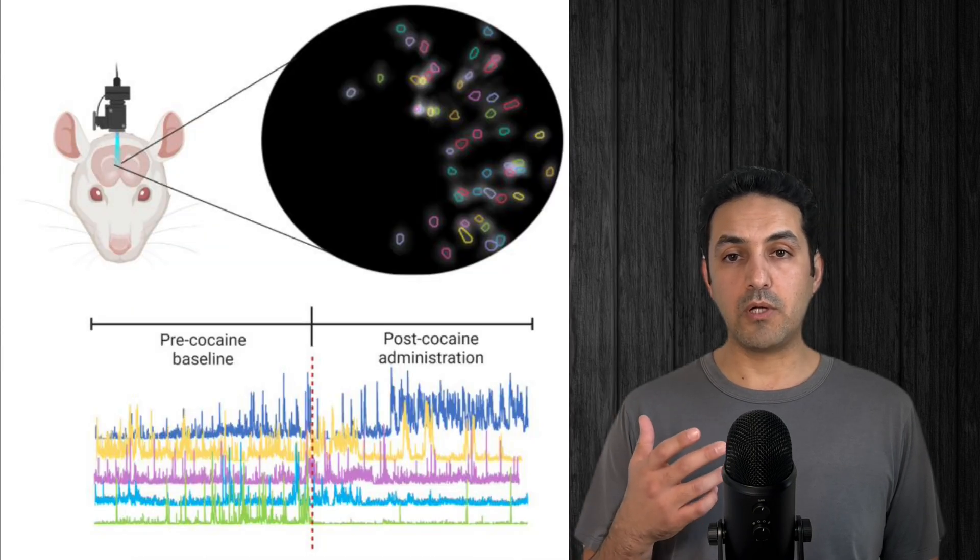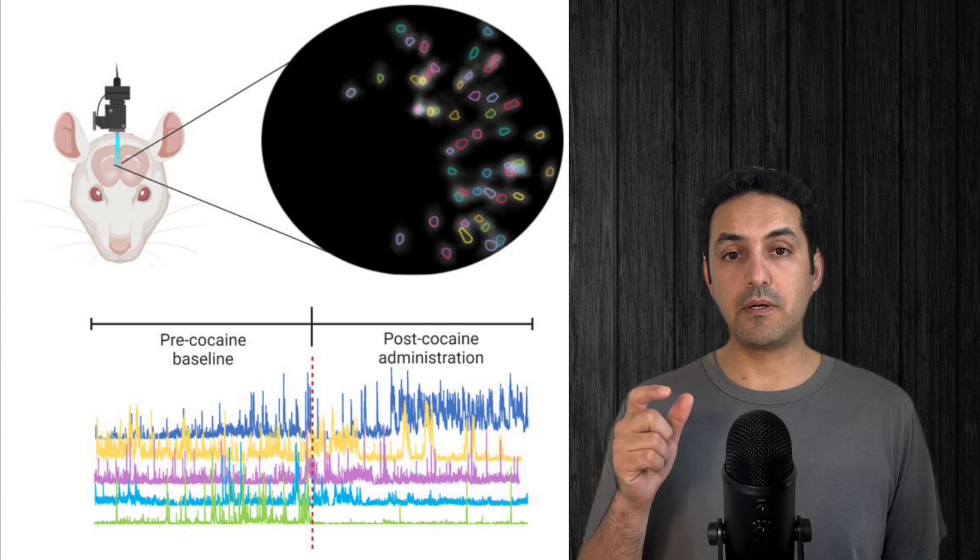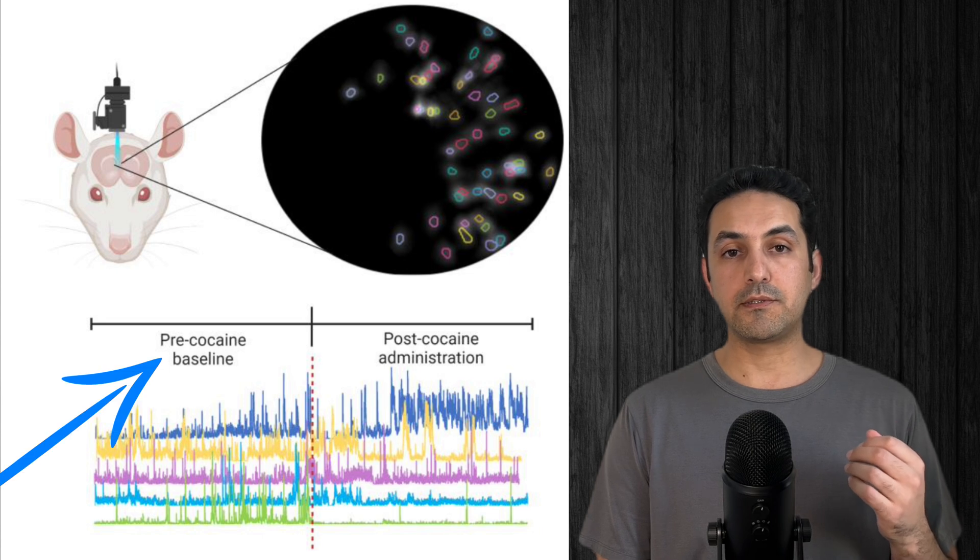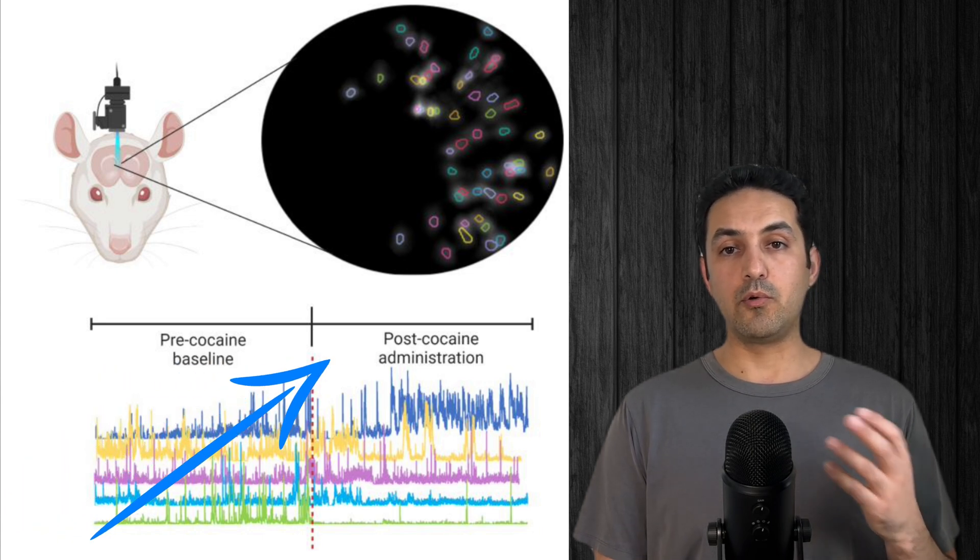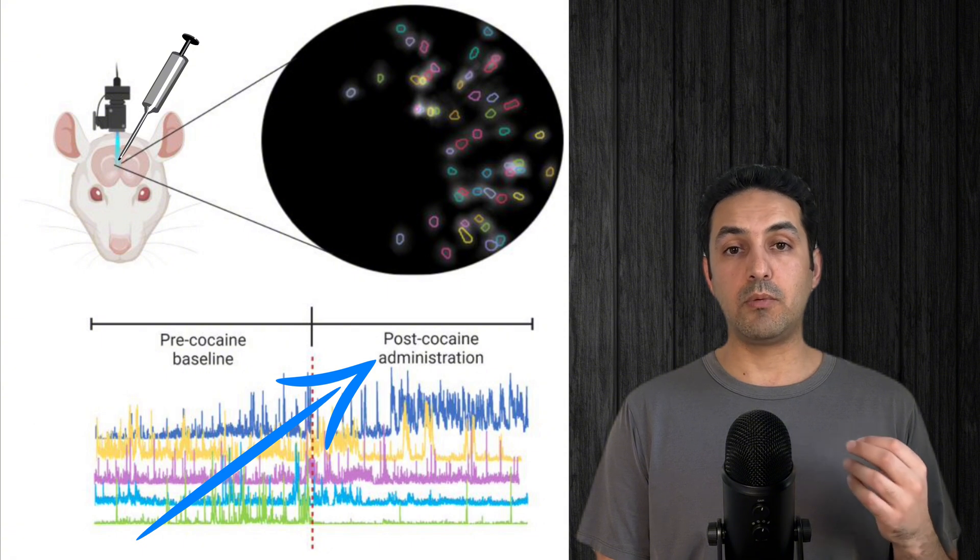In this project, we wanted to see if the neurons in a certain region of a rat's brain are stable or not. And we wanted to answer this question under two conditions: when the rat was living a normal life, and also when the rat was administered a small dose of cocaine.